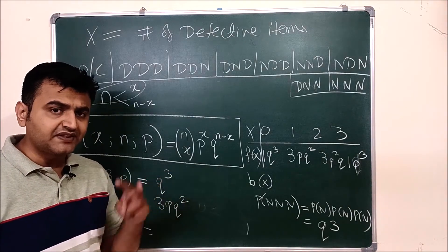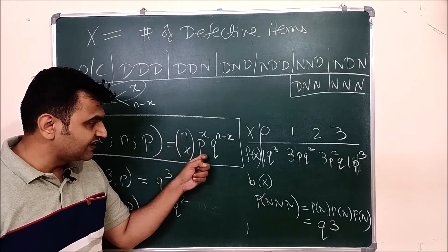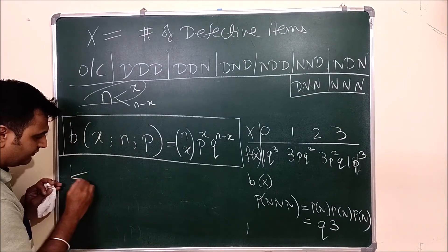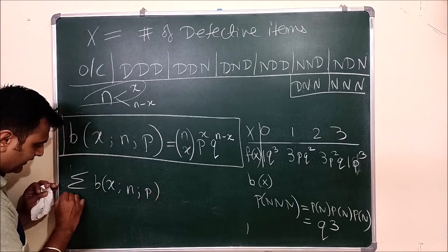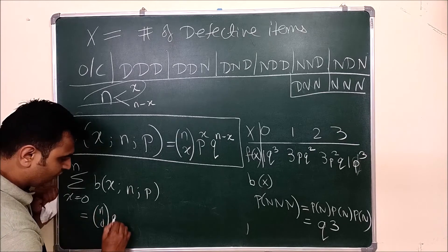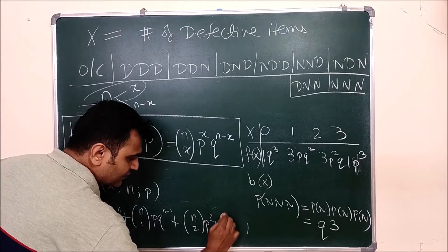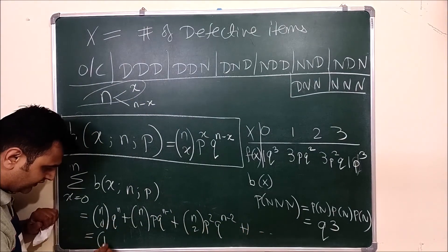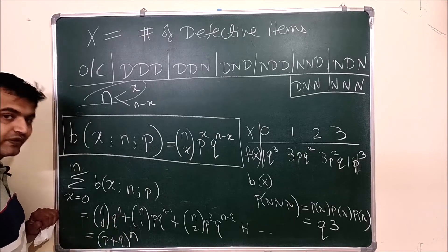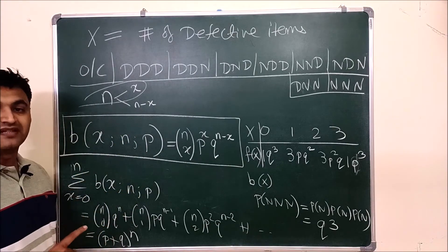Does this form a valid probability mass function? It must be non-negative and sum to one over all X. All the terms are clearly positive. For the summation: summing B(X; N, P) for X from 0 to N gives C(N,0)·Q^N + C(N,1)·P·Q^(N−1) + C(N,2)·P²·Q^(N−2) + … + C(N,N)·P^N. This is nothing but (P + Q)^N. But Q = 1 − P, so P + Q = 1, and 1^N = 1. So the sum of all probabilities is one. Therefore this satisfies both conditions and is indeed a probability mass function.